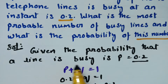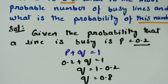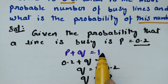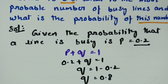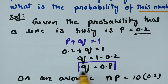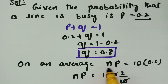Given: the probability that a line is busy, p, is equal to 0.2. We know that p plus q is equal to 1, so if p is equal to 0.2, then q is equal to 1 minus 0.2, therefore q is equal to 0.8.